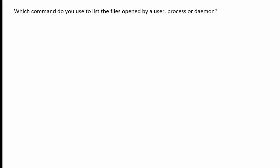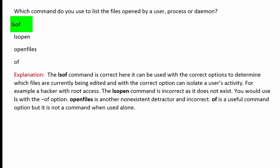The last question in this group: which command do you use to list the files opened by a user, process, or daemon? The lsof command is correct here. It can be used with the correct options to determine which files are currently being edited, and with a specific option can isolate a user's activity — for example, a hacker with root access. The lsopen command is incorrect as it does not exist. You would use ls with the -of option. Open files is another non-existent option and incorrect. -of is a useful command option but is not a standalone command.